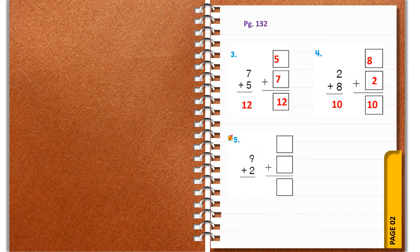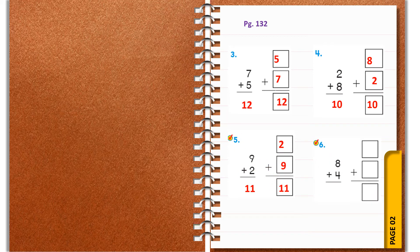Fifth one: nine plus two. Draw nine counters or nine balls then add two more balls to it — you will get eleven as the sum. Change the order and add again, you will get eleven — still the same sum. Sixth one: eight plus four. Add and you will get twelve as the sum. Change the order to four plus eight — the answer is still twelve.